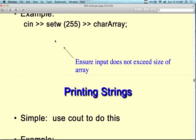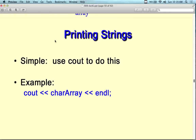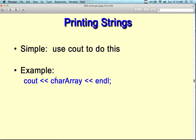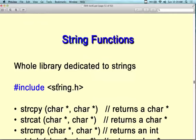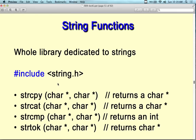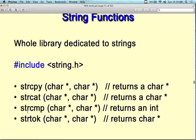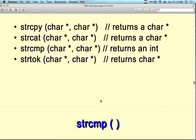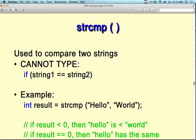You can also use setw with output to create columns — it stops output at a certain width, which is different from tabs. In terms of printing strings, simply use cout on the character array. It's the same as any other character array — you get the starting address and it prints. There's a whole library dedicated to strings: strcpy for string copy, strcat for concatenate, strcmp for compare, strtok for tokenize, plus functions returning characters, integers, and other goodies.